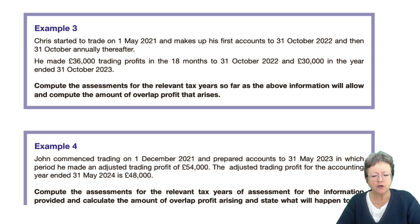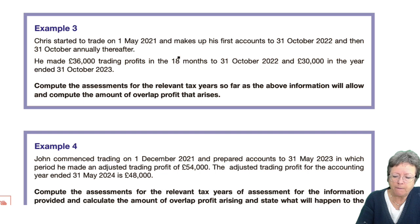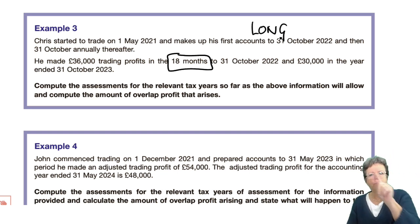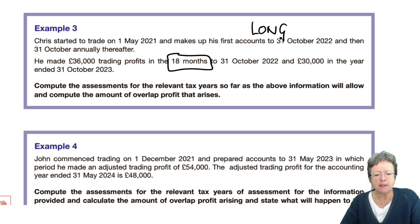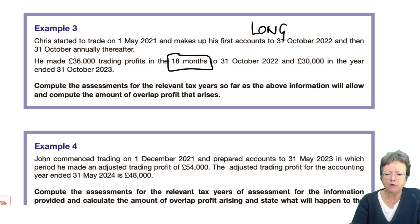Let's do another example — example number three. Chris started to trade on the 1st of May 2021. He made his first accounts up to the 31st of October 2022, and then the 31st of October annually thereafter. In that 18-month period — that's a long set of accounts — he made £36,000 worth of profits to October 2022, and then £30,000 profits in the following year. The question asks: compute the assessment for the relevant tax years so far as the information allows, and compute the amount of overlap profits that arise.